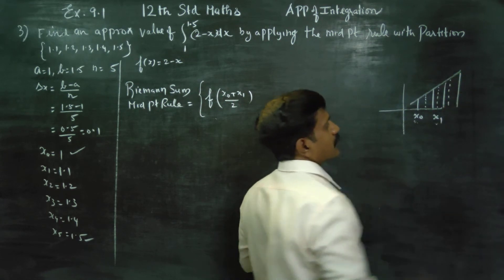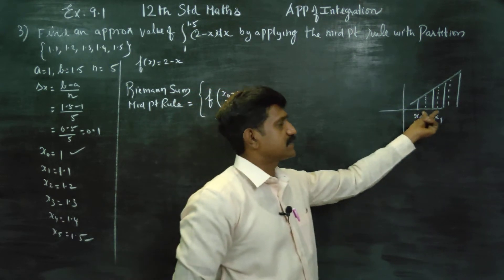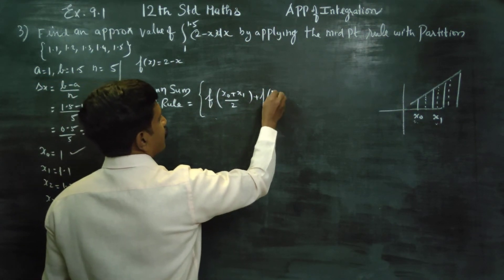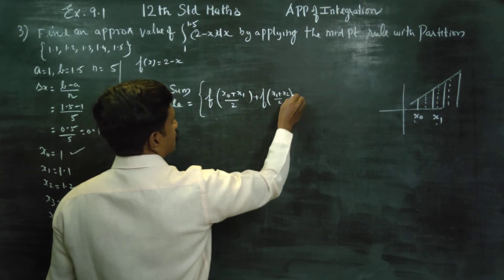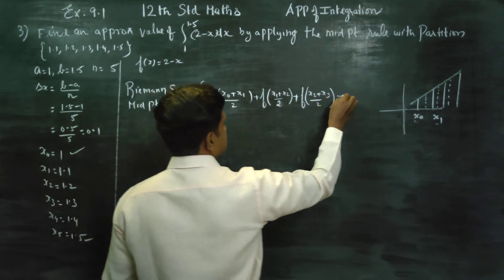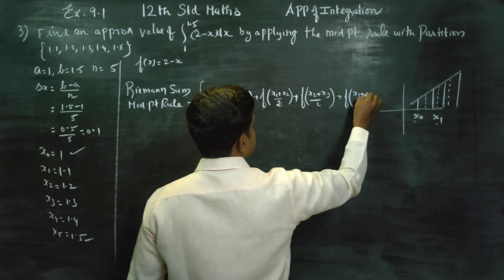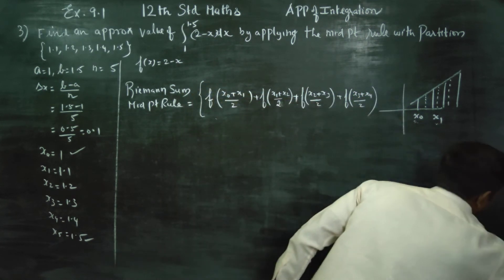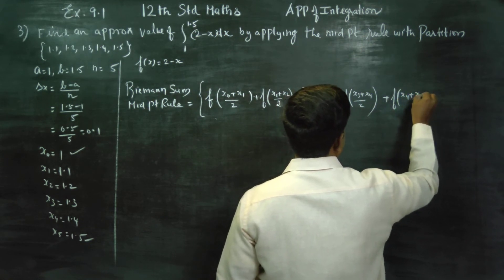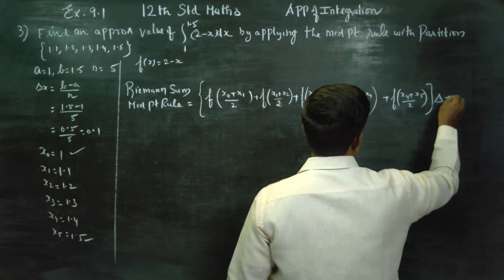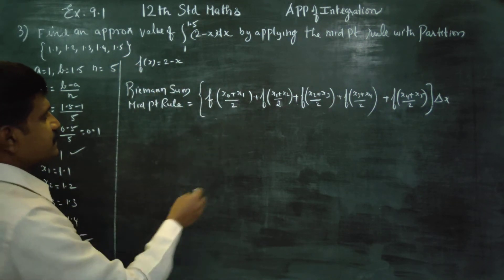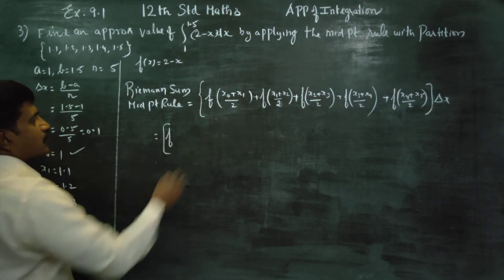The midpoint rule formula is: delta x into f of (x0 plus x1 by 2) plus f of (x1 plus x2 by 2) plus f of (x2 plus x3 by 2) plus f of (x3 plus x4 by 2) plus f of (x4 plus x5 by 2), into delta x. With 5 partitions, we have 5 middle points.